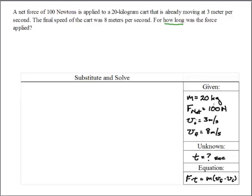At this point it is just simply replacing numbers for letters. So there is 100 newtons times t equals mass is 20. Velocity final is 8 minus the velocity initial which is 3.